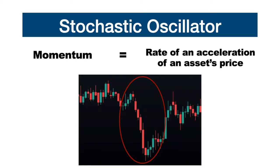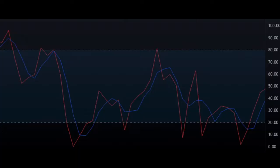The momentum is the rate of acceleration of an asset's price. The stochastic is called oscillator because it oscillates between the levels of 0 and 100.